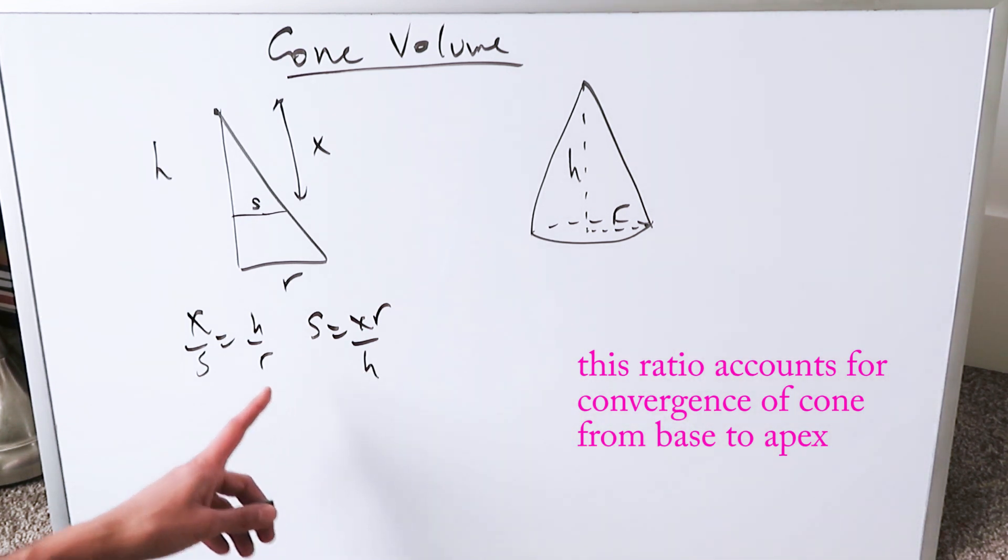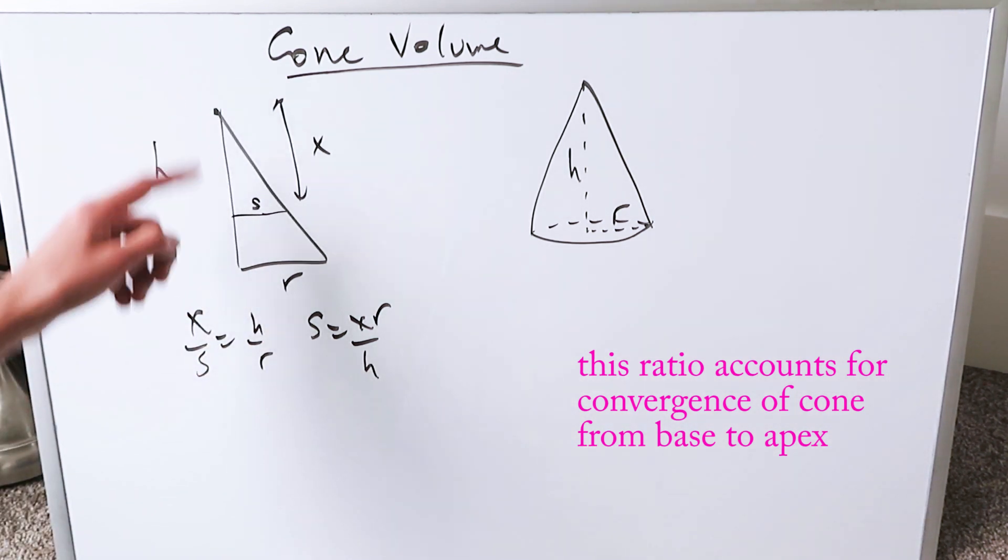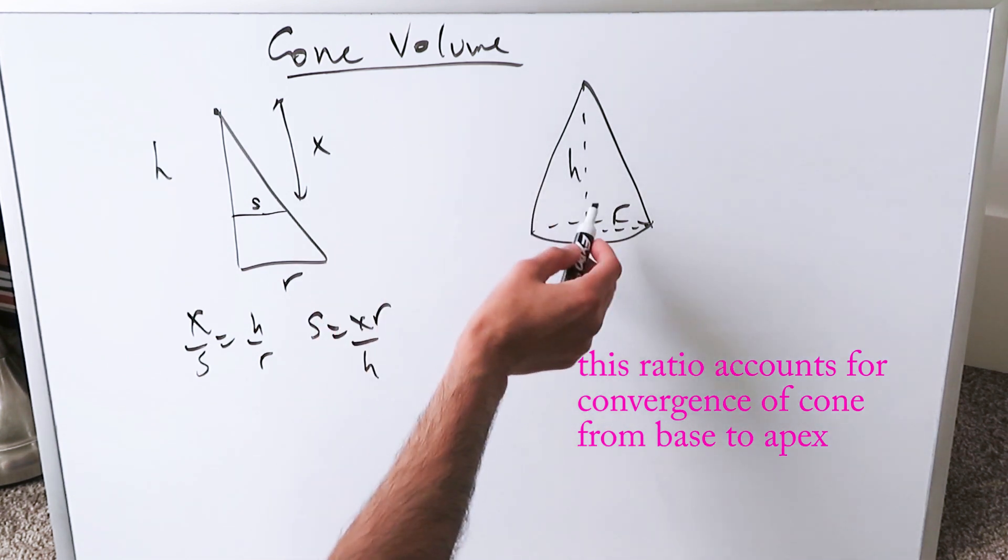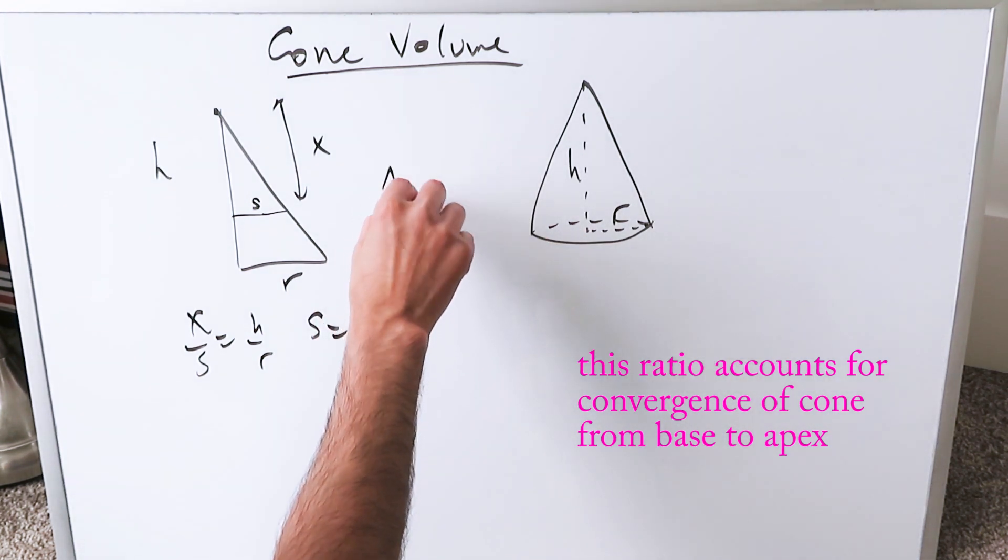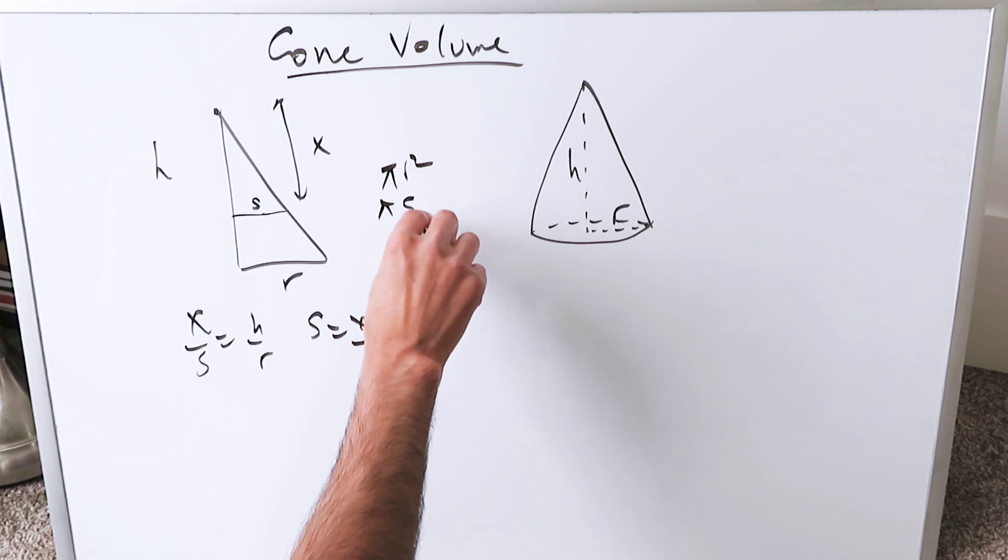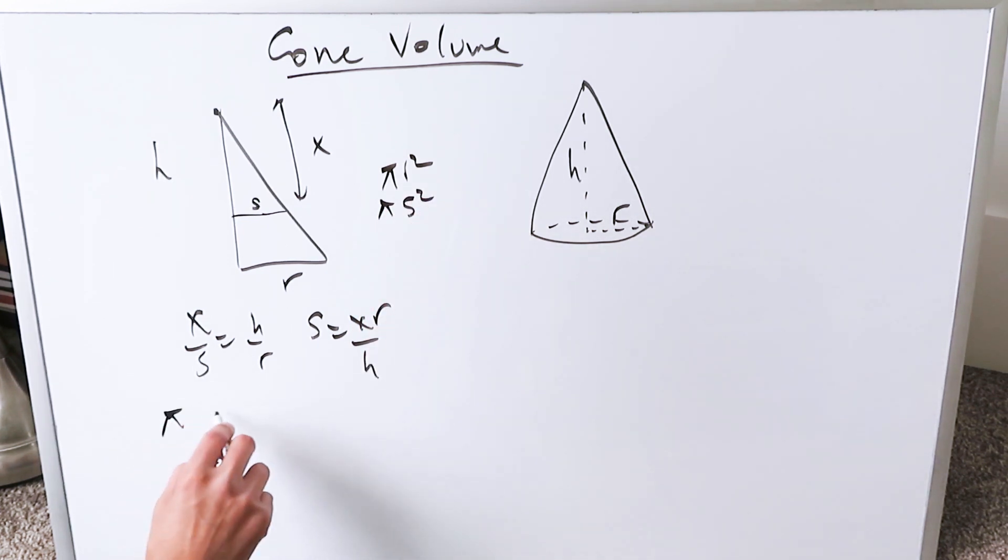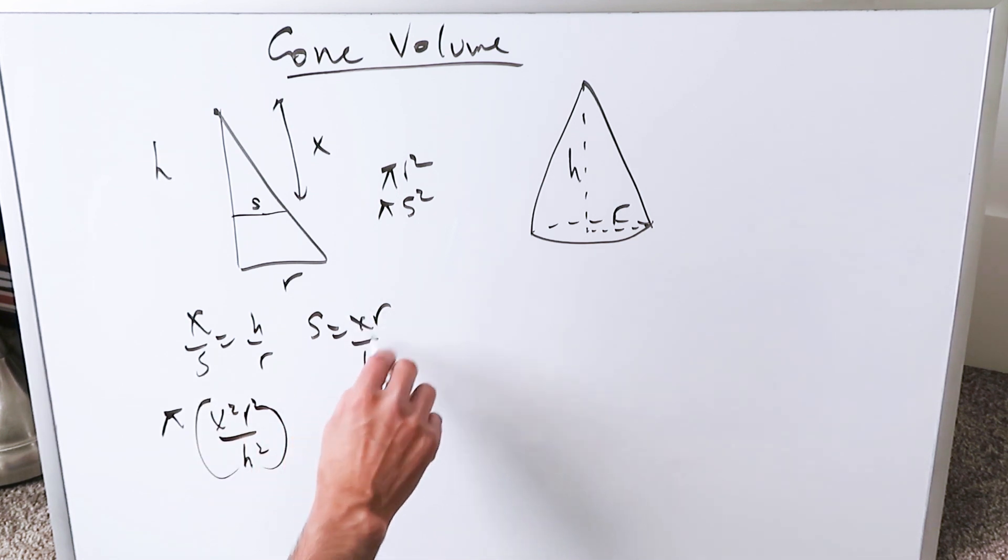This represents the radius of this cone at any point between a lower limit and an upper limit, and all your slices are circles, πr². You're looking here at πs², which would be πx²r²/h², because I'm squaring all of that.